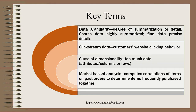The key terms we need: data granularity is the degree of summarization or detailing of data — coarse data is highly summarized and fine data has precise details. Then there is click stream data, where a customer's website clicking behavior is observed, and that really helps in business intelligence. Whatever you search on the web, next time when you surf again it gives you similar advertisements based on what you were browsing in the previous click — your every click and behavior is observed.